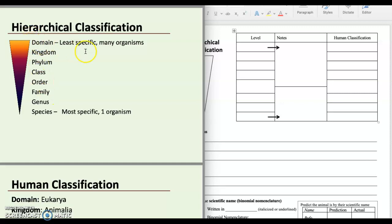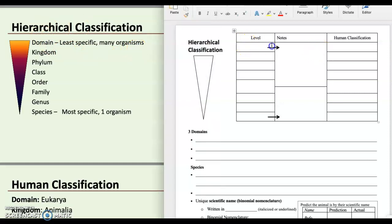So for domain, for example, there are three domains, which we'll get into in just a moment, but then each domain can split into more than two kingdoms and each kingdom can split into more than two phylums. So what we end up having is a really big, broad level of organization. So what I want you to write here is level, you're going to write the word domain, and then in the notes say least specific, many organisms. So that's just trying to remind you that this is a lot of organisms.